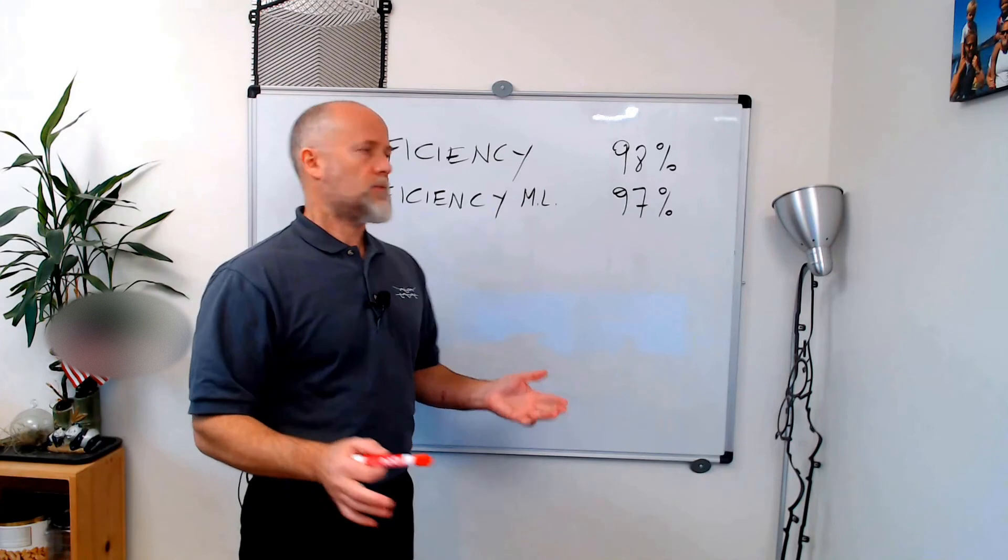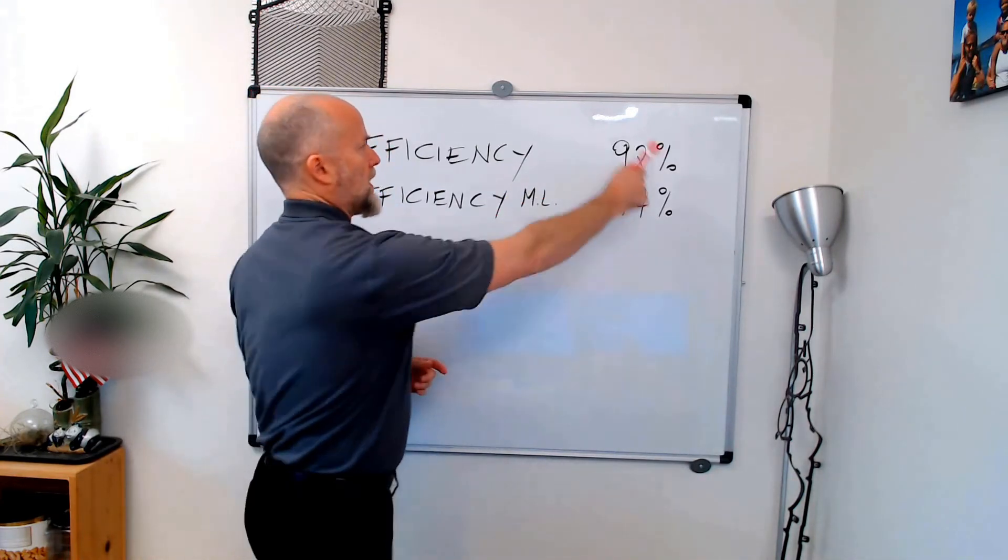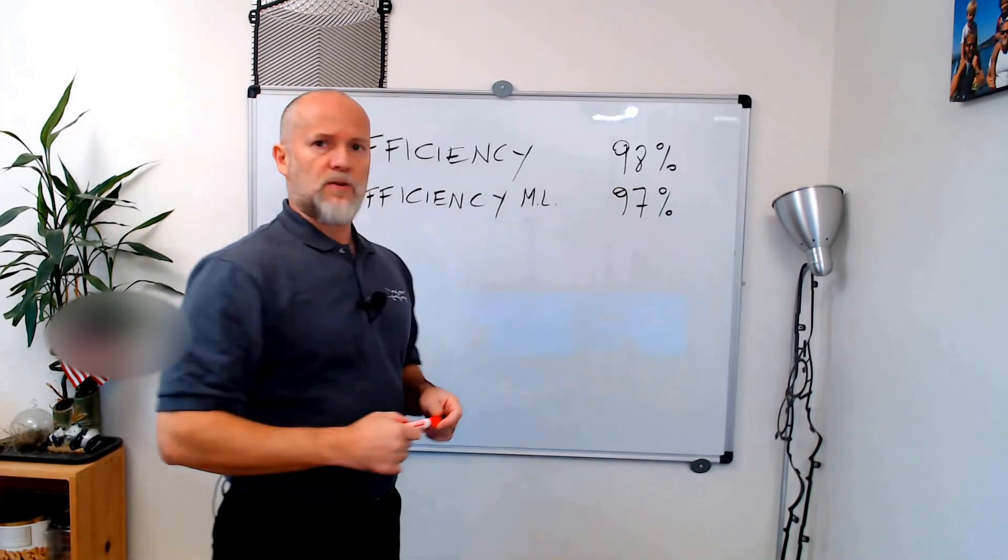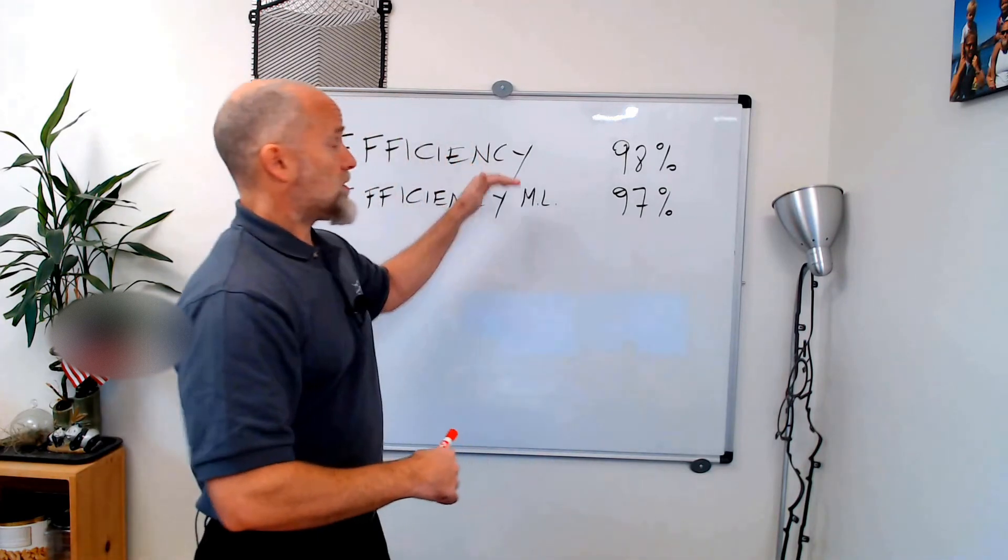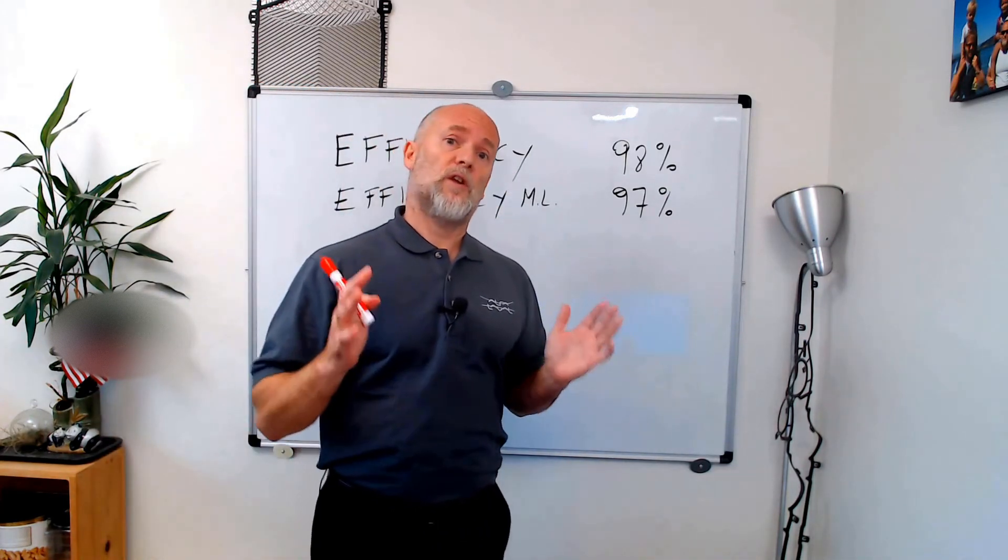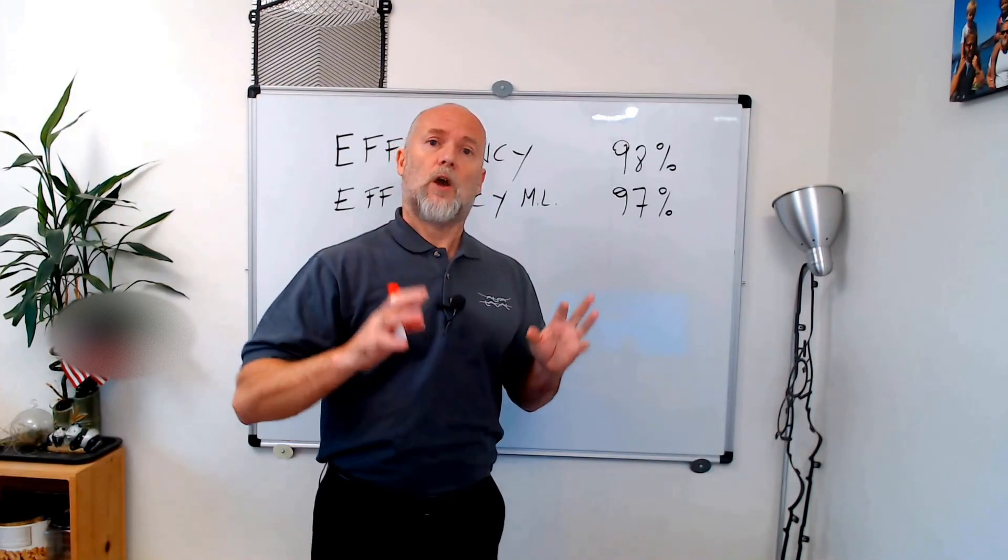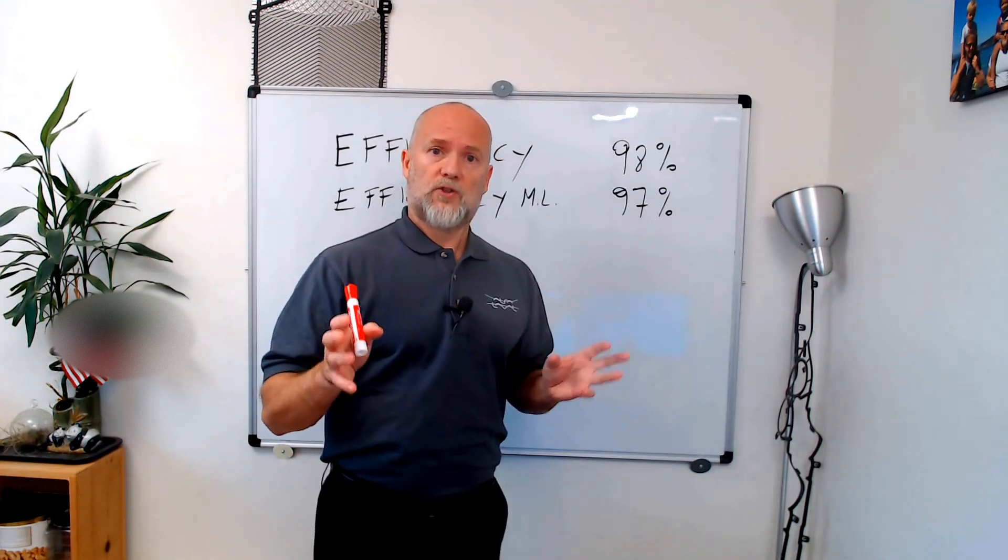So we said that we have efficiency and efficiency machine learning like 98% in case of efficiency and 97% in case of efficiency machine learning. What are these? Efficiency is the efficiency of your heat exchanger currently, the efficiency of your heat exchanger compared to the on paper efficiency, the theoretical efficiency of your heat exchanger.